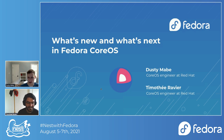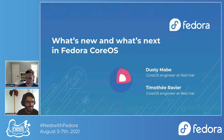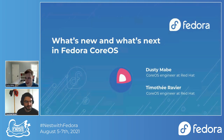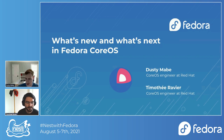Welcome and thank you to everybody for coming to our session. Today we're going to talk about what's new and what's next in Fedora CoreOS. My name is Dusty Mabe. I'm an engineer at Red Hat. I started at Red Hat in 2013 in consulting, then switched over to engineering in 2015, and I've been working on Atomic Host and CoreOS stuff ever since. Before that I was working at a telecom company on their CentOS Linux platform.